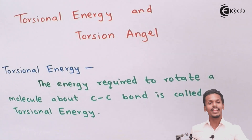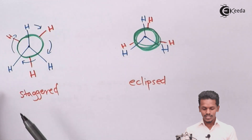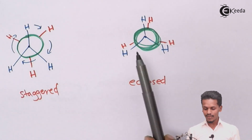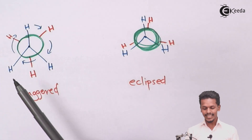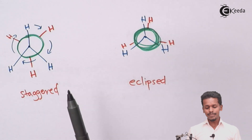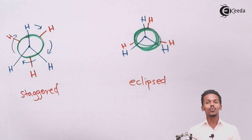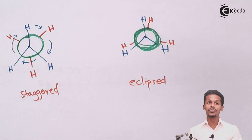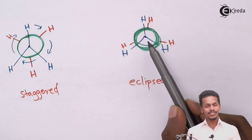As we took an example in the previous lecture, one form is staggered and one is eclipsed. We can rotate to convert the staggered form into the eclipsed form, or vice versa. The energy required to rotate the carbon-carbon bond to a particular angle is known as torsional energy.